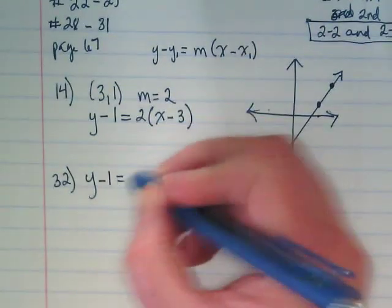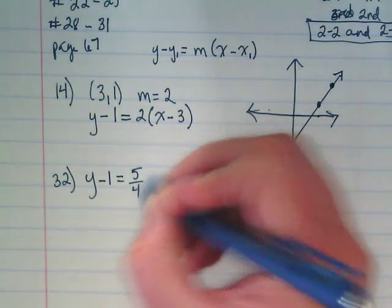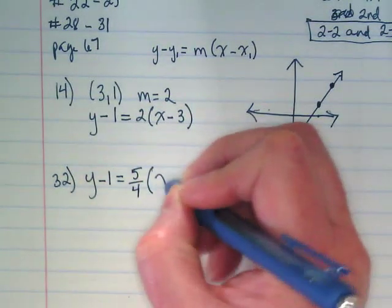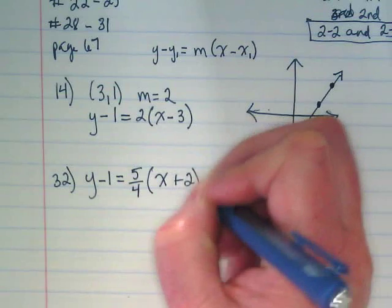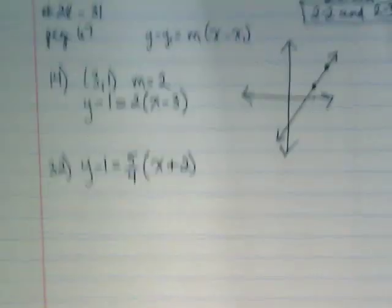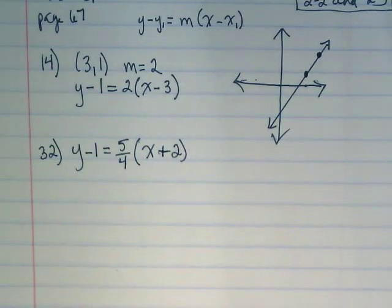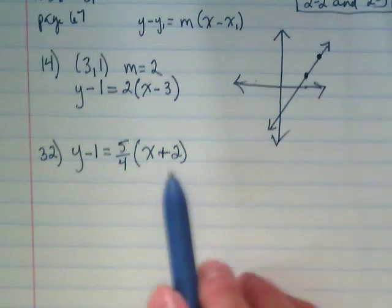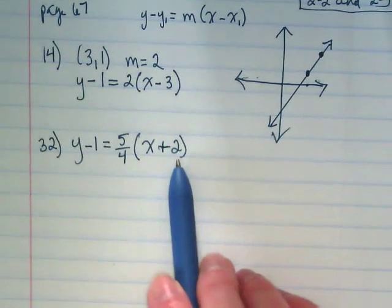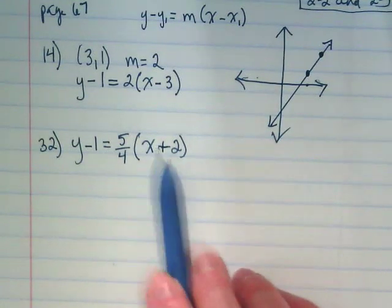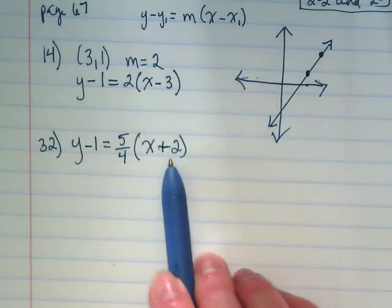Y minus 1 equals 5 over 4 times x plus 2. In order to sketch the graph of this, we have to pull the x-y pair out of this, don't we? This is my x.